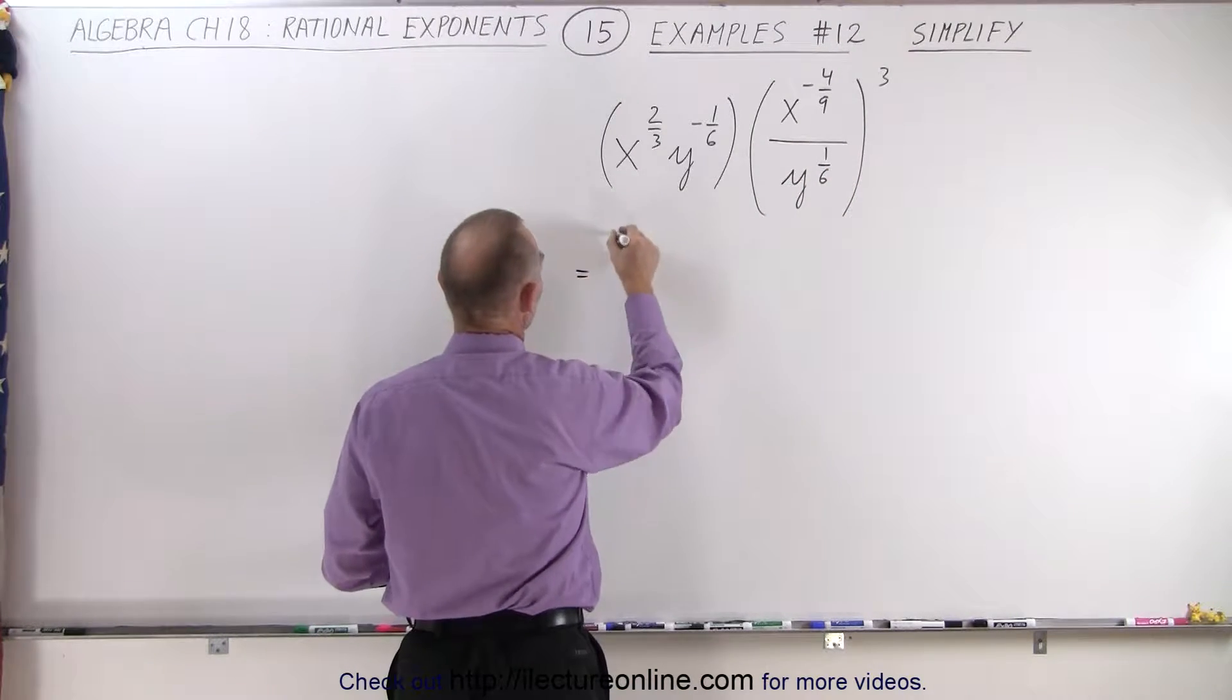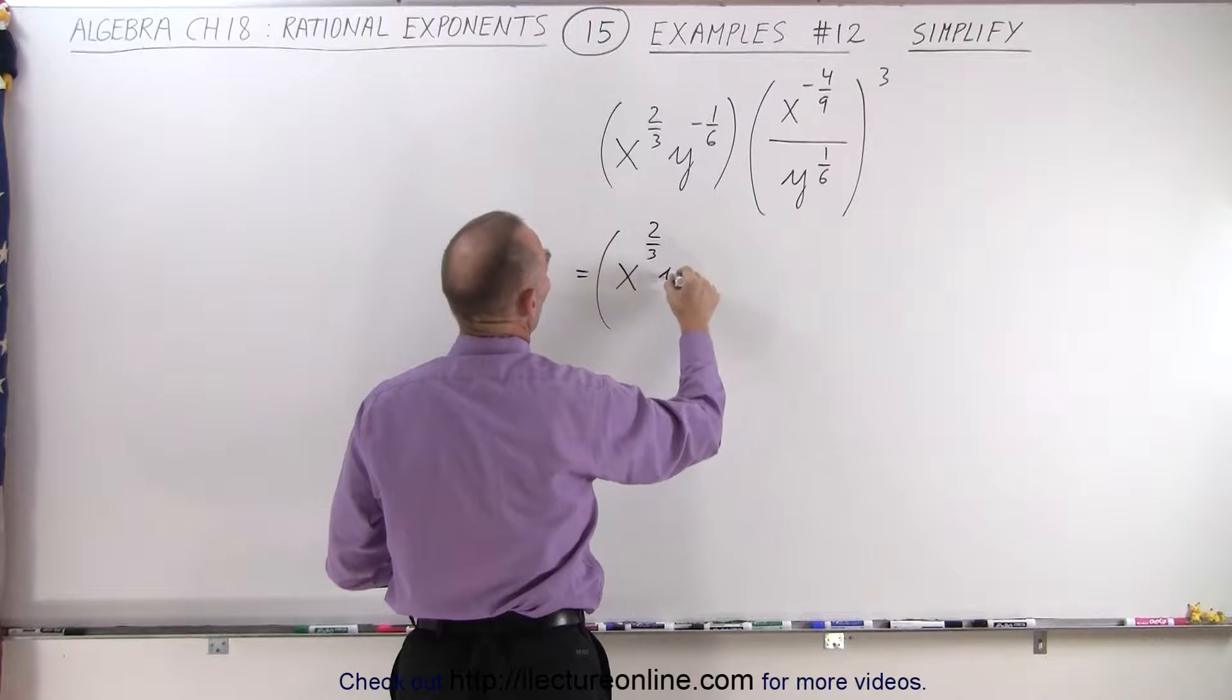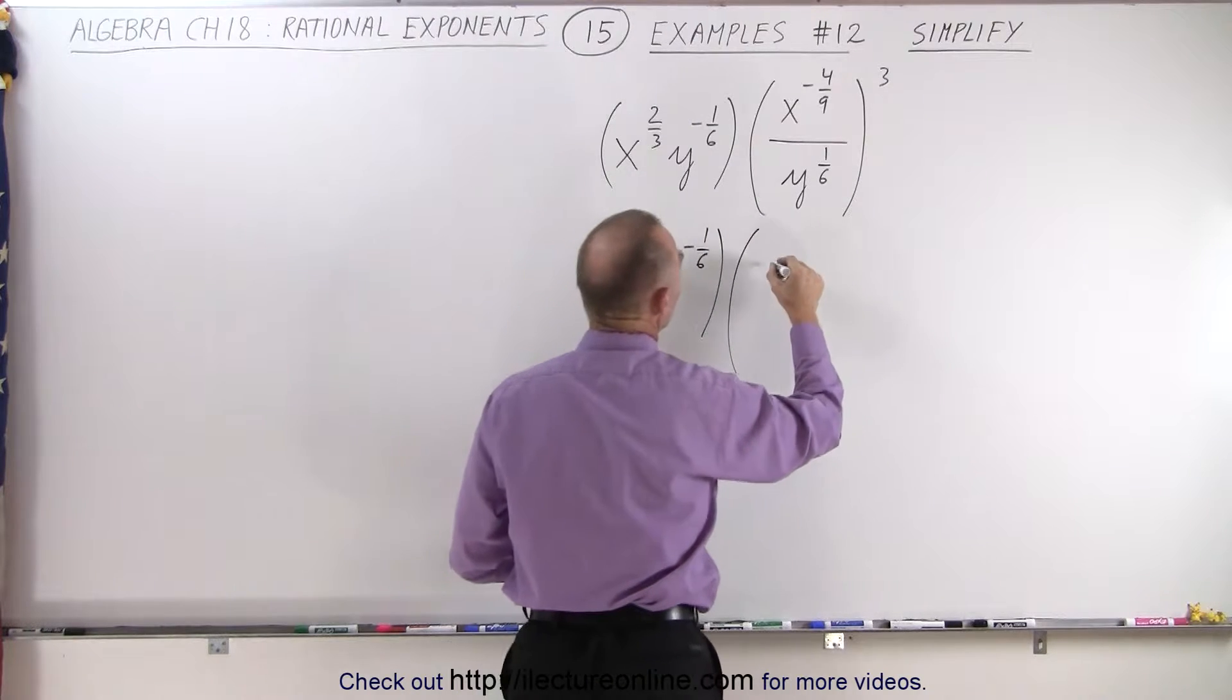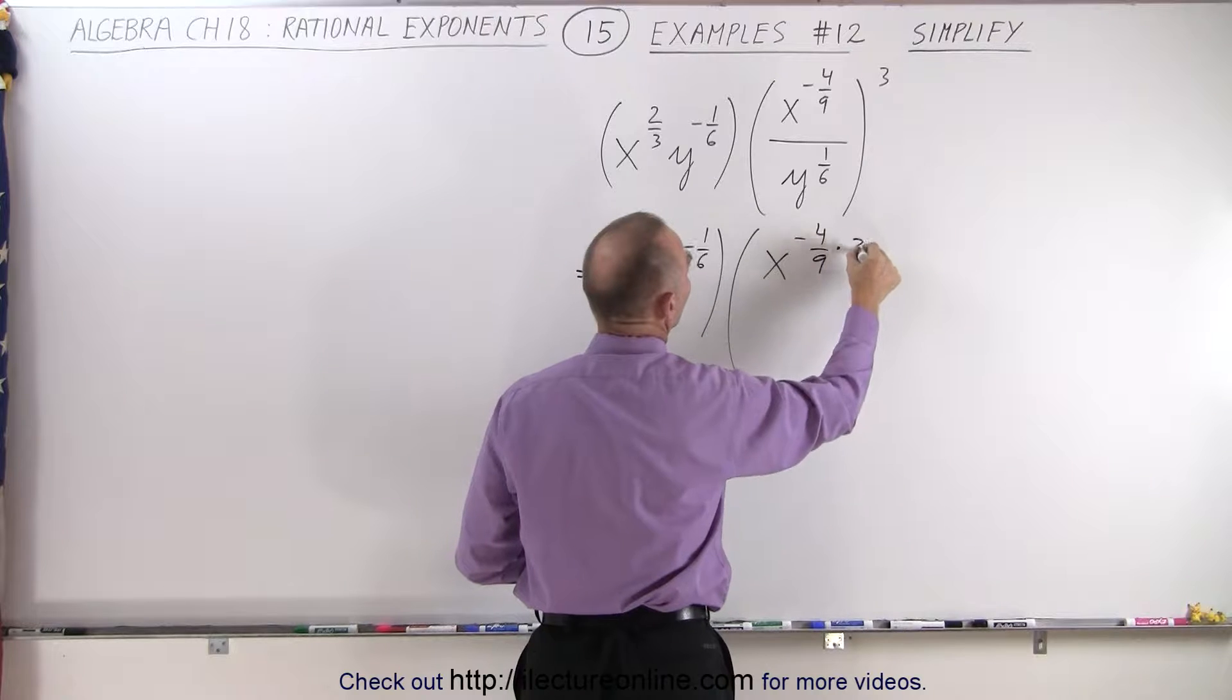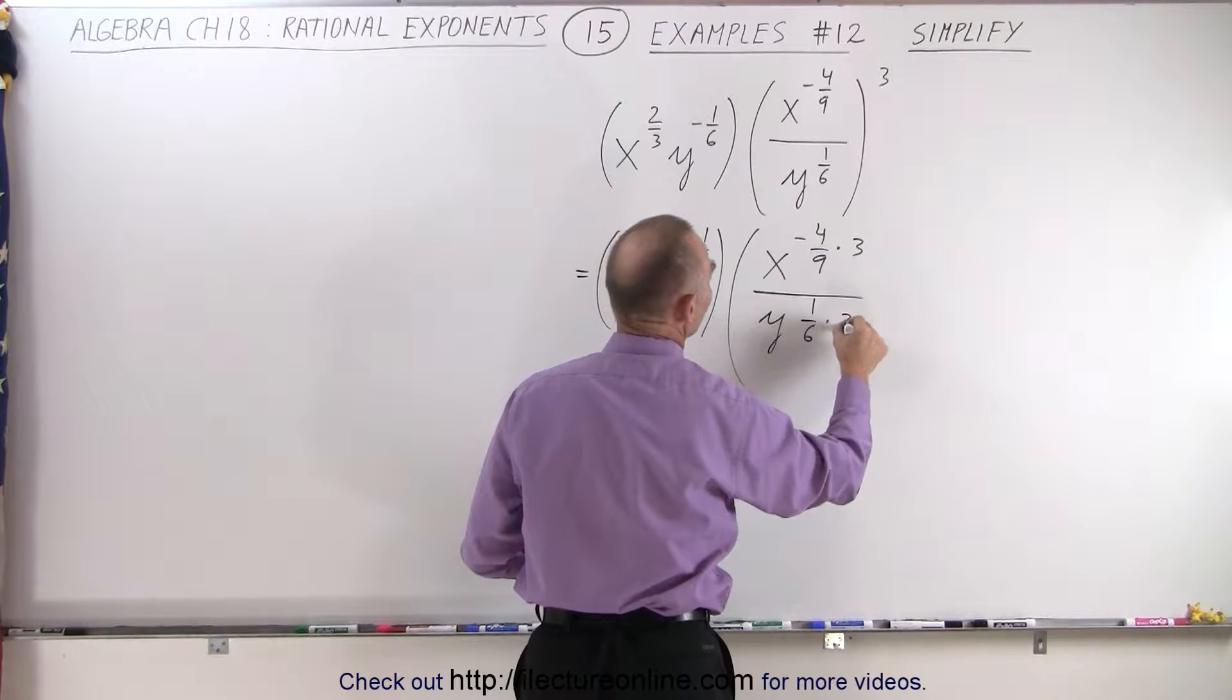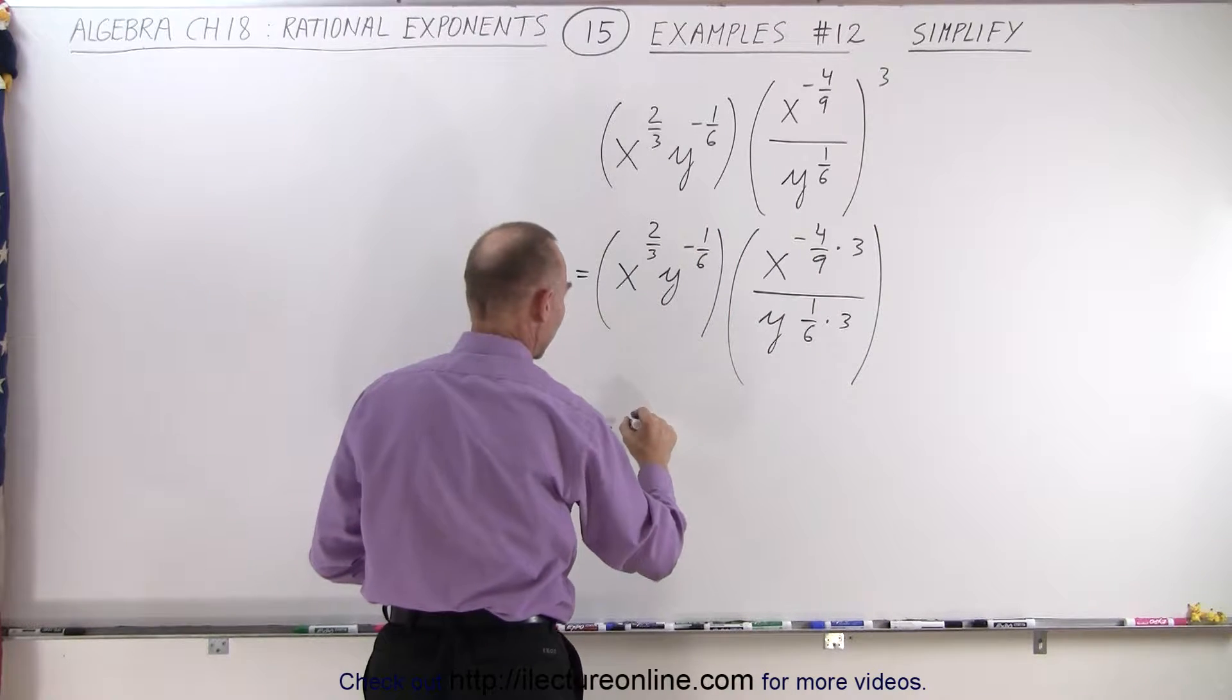Let's do that first. So this is equal to, let's copy this down, x to the two-thirds, y to the minus one-sixth times, in the numerator, this becomes x to the minus four over nine times three divided by y to the one-sixth times three. Okay, when we simplify that, what do we get?